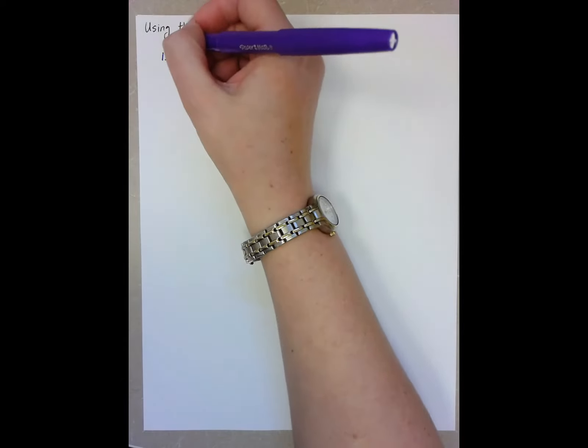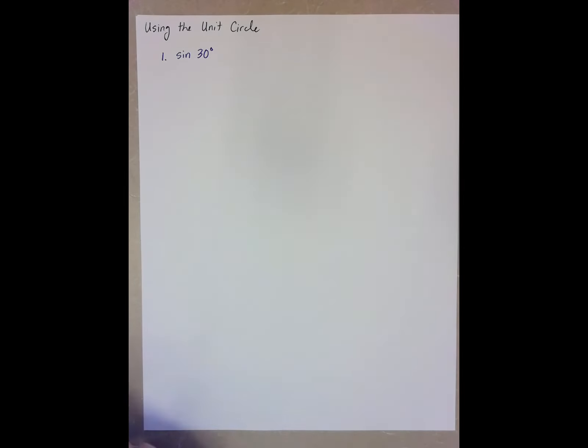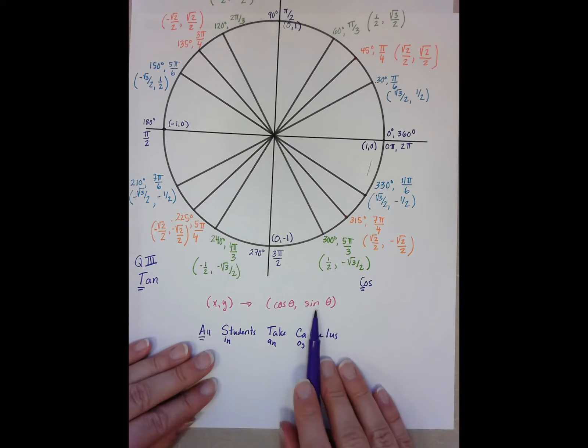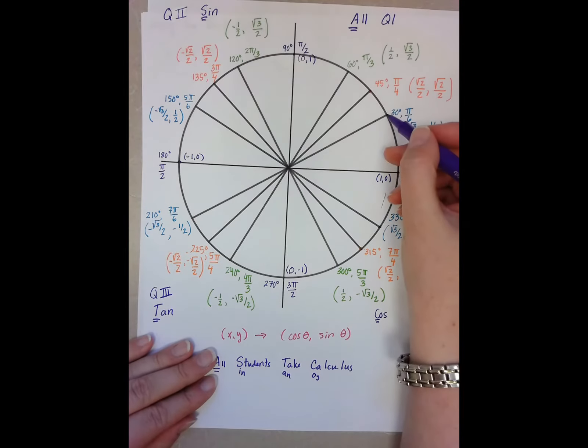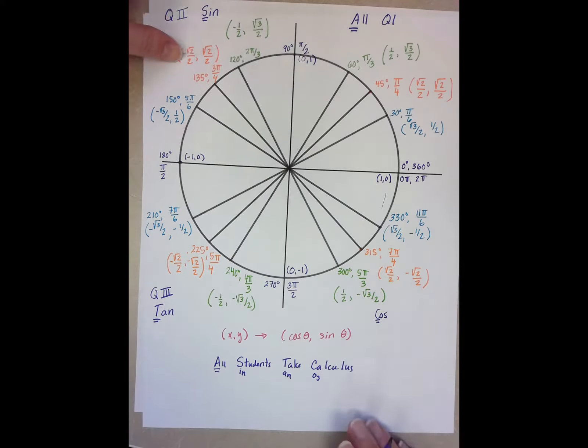For instance, number one, sine of 30 degrees. So we know that sine is our y-coordinate, and we know that 30 degrees is right here. So sine of 30, y-coordinate, is one-half.